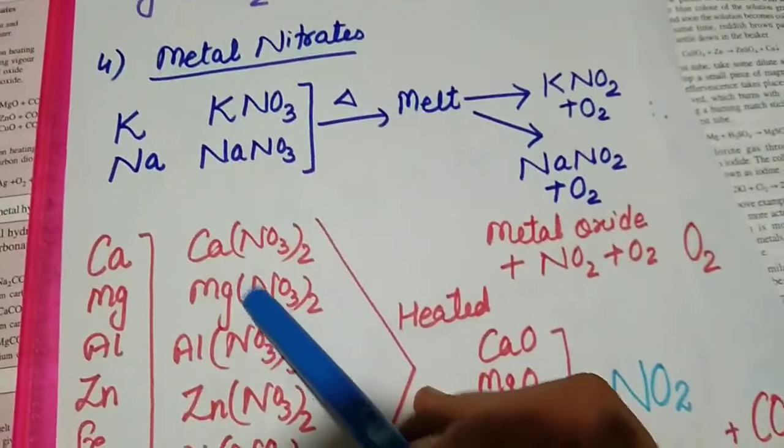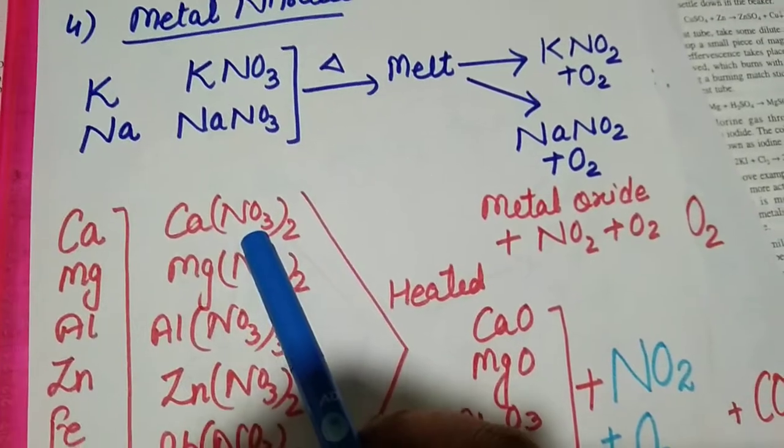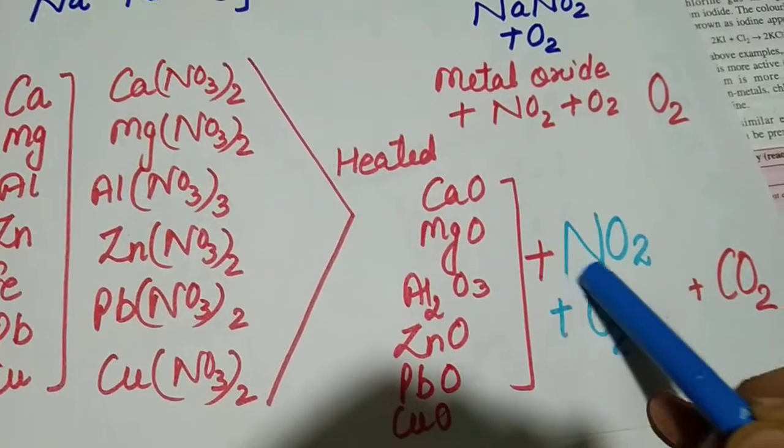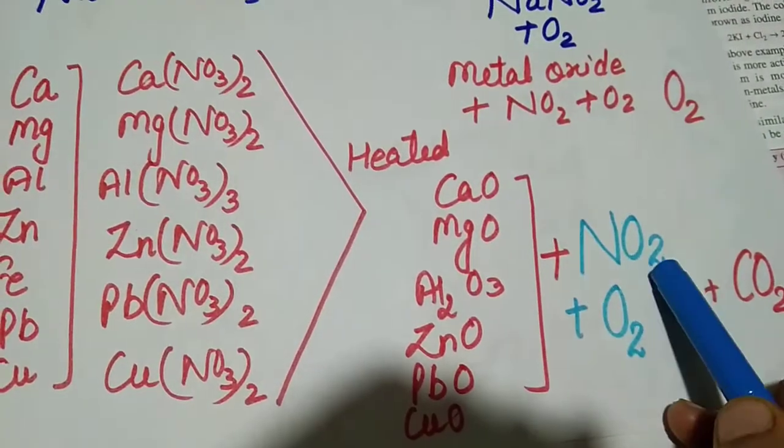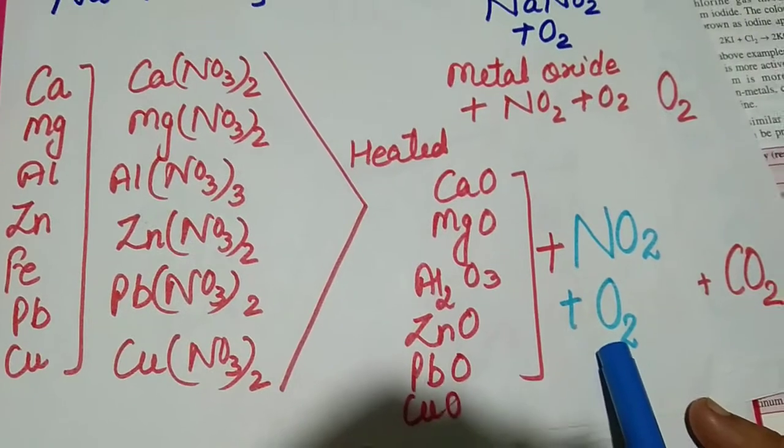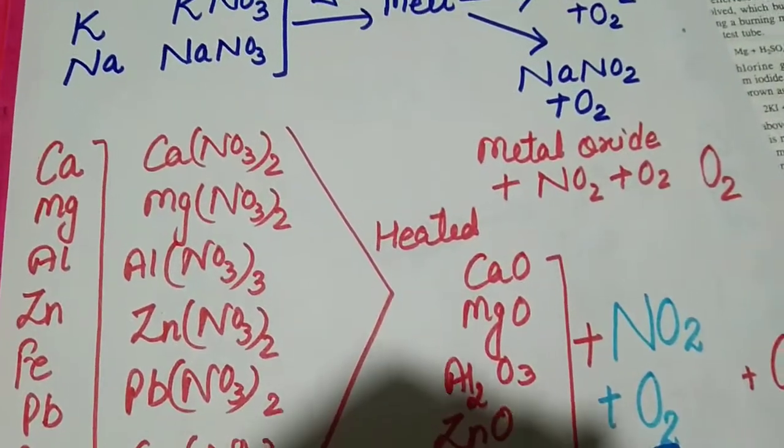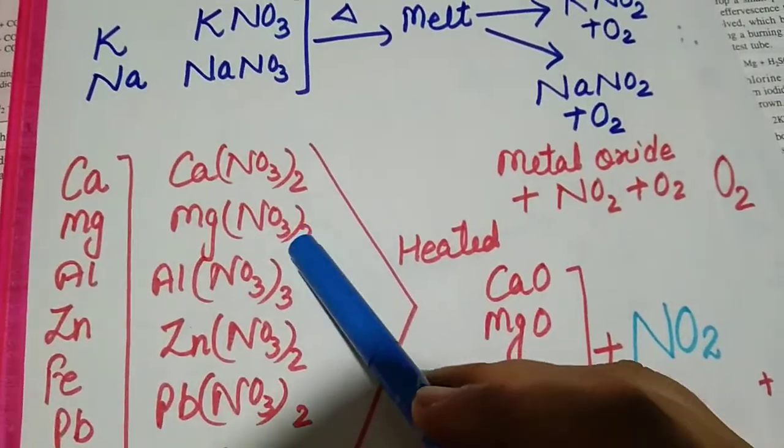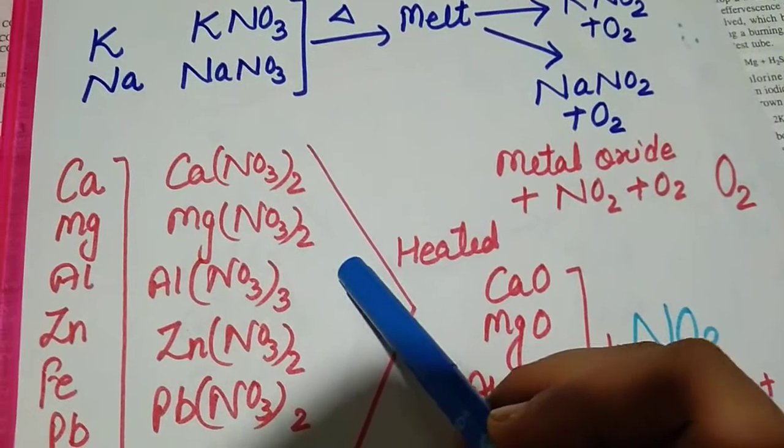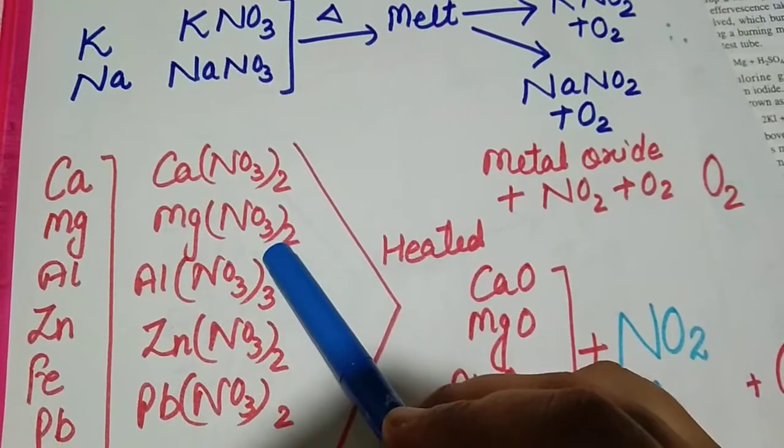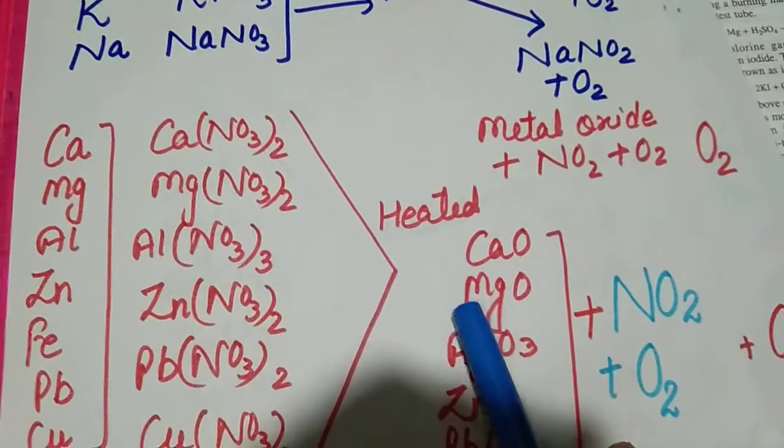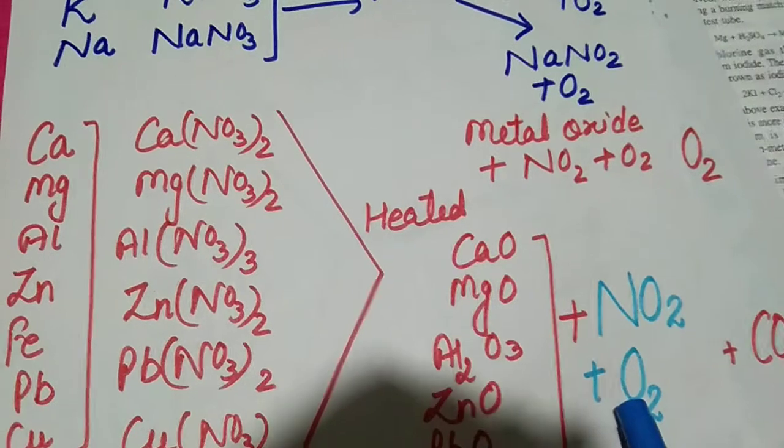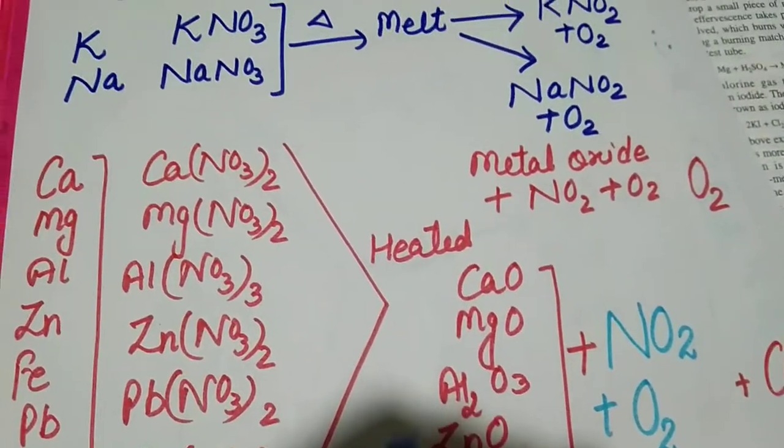If you are asked write your observation when calcium nitrate is heated, we will say reddish brown gas, that is nitrogen dioxide, is liberated along with colorless gas which is oxygen. This is how you answer observation based questions. And if you are asked to write the reaction based upon thermal decomposition of magnesium nitrate, here reaction is asked, so you have to write the reaction: magnesium nitrate gives magnesium oxide plus NO2 plus O2.